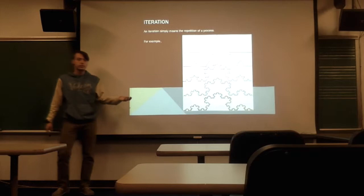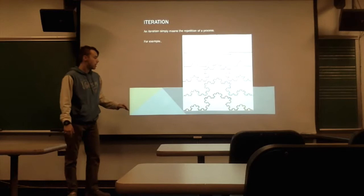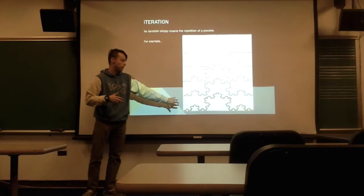An iteration is just a process repeated. So like in the Koch snowflake here, if you were to keep iterating — one, two, three, four times — it becomes more detailed. And so if you were to zoom in, you would continue to see that repeating snowflake.